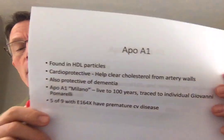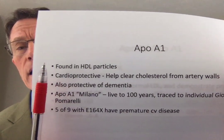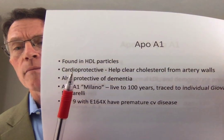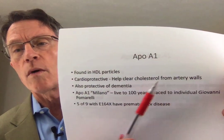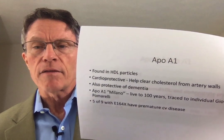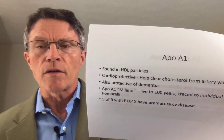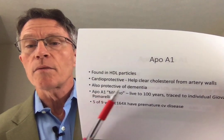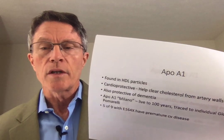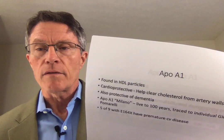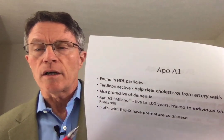How are those proteins different? ApoA1 is found in HDL particles. It's cardioprotective — it helps clear cholesterol from the artery walls. It also appears to be anti-inflammatory in effect, which makes sense if it's clearing cholesterol from artery walls. It's also protective from dementia. That's probably another reason why HDL particles are cardioprotective and dementia-protective, whereas LDL particles — especially the small dense ones — are a problem.